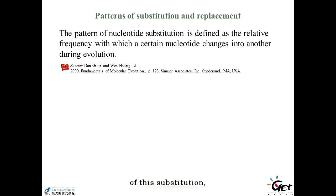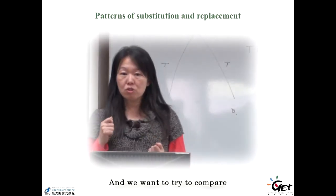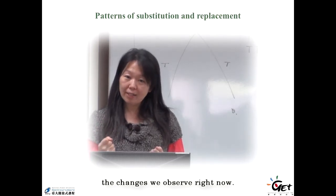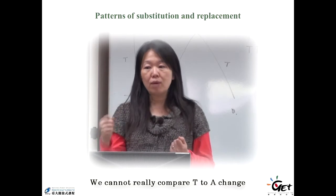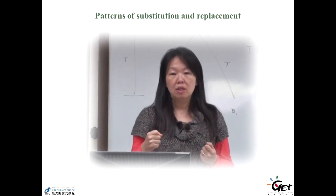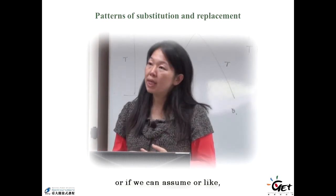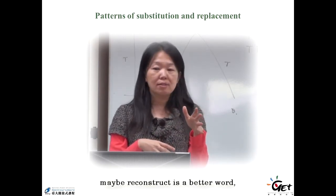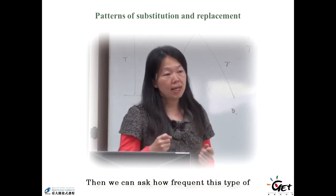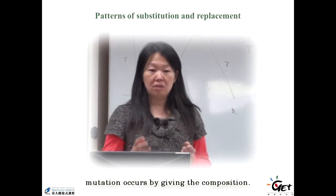If we want to compare the pattern of substitution, we see this again. The J should be on the top, so I hope the handout is right. We want to try to compare the changes we observe right now, but we observe more T to A change. What does that mean? We cannot really compare T to A change to another A to C change. We should have a baseline. So if we have the ancestral sequence, or if we can reconstruct the ancestral sequence, then we can ask how frequent this type of mutation occurs by giving the composition.